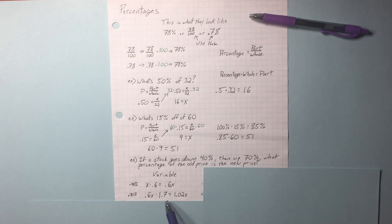So after a 40% reduction, we have 0.6x. Increase by 70 or increase by 1.7. 100% plus 70% is 170%, aka 1.7. And we get 1.02x, which means that the stock is now 102% of what it used to be.